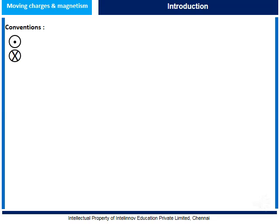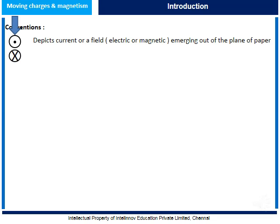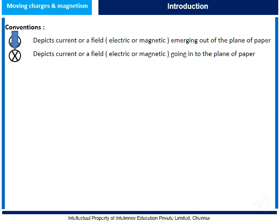Let us first understand the sign convention in moving charges and magnetism. A dot sign depicts current or a field — either electric or magnetic — that emerges out of the plane of the paper, and a cross sign depicts current or a field that is going into the plane of the paper.